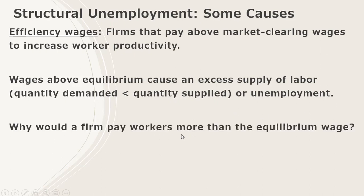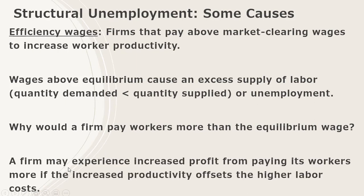Why would a firm pay workers more than the equilibrium wage? It's in its profit-maximizing interest. A firm may experience increased profit from paying its workers more if the increased productivity offsets the higher labor costs.